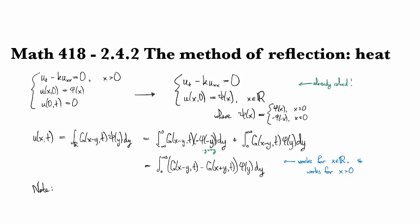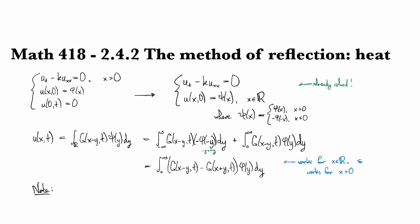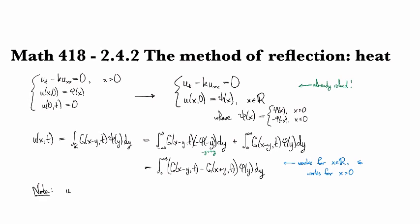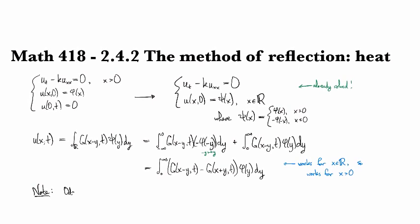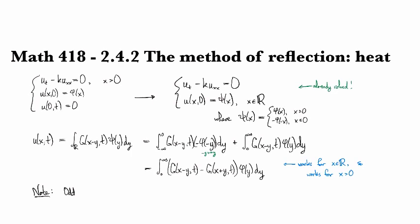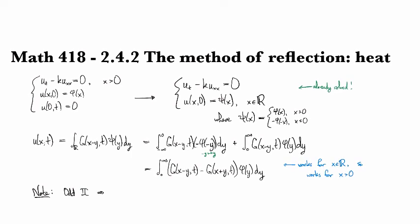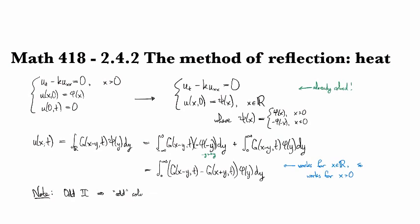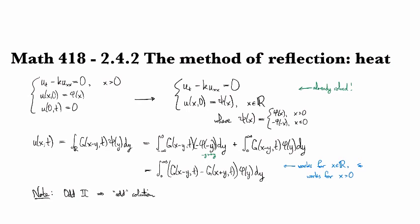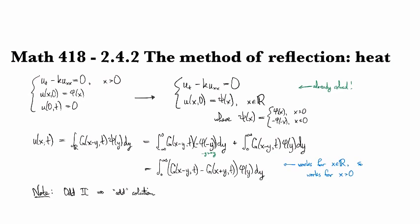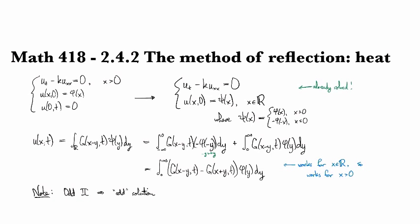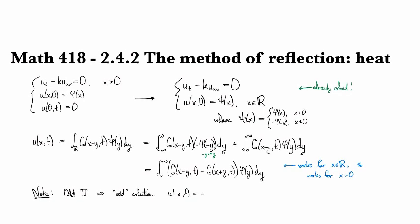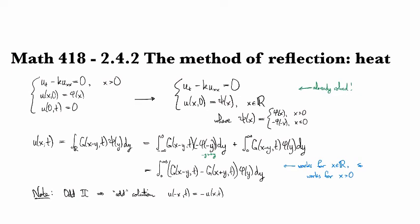And I didn't mention this earlier, but I just wanted to point out that our solution u is going to be continuous. And the odd initial condition implies an odd solution. So by odd here, I just mean with respect to the x variable. So in other words, u of minus x, t is going to equal minus u of x, t.